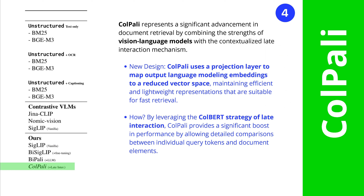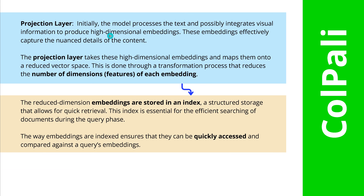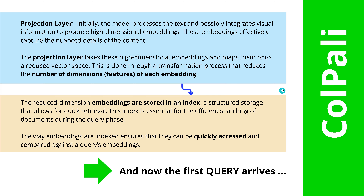And now we have just one step to integrate for our full-fledged ColPali. We use from the Colbert strategy the late interaction mechanism to provide a good boost in performance and a faster pre-compute system with even good response to ad-hoc queries. So ColPali — yeah, we have a projection layer, and we reduce the complexity and number of dimensions of each embedding. Then the reduced-dimension embeddings are stored in an index — a structured storage that allows for quick retrieval.